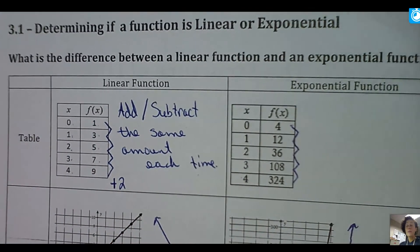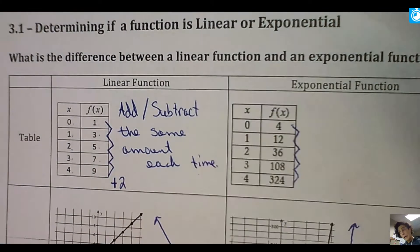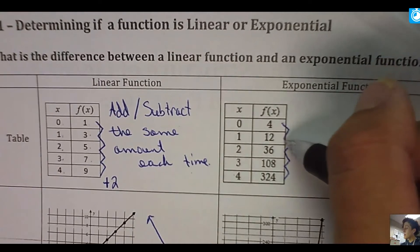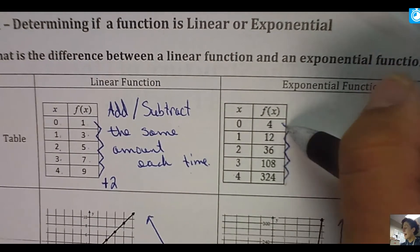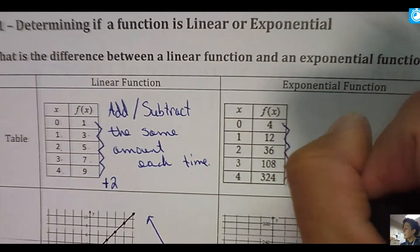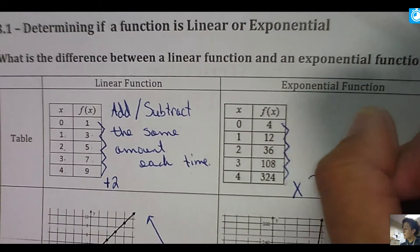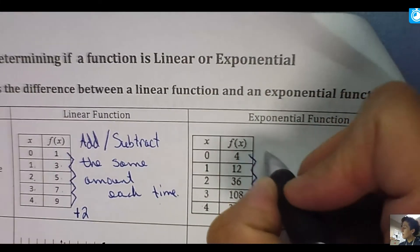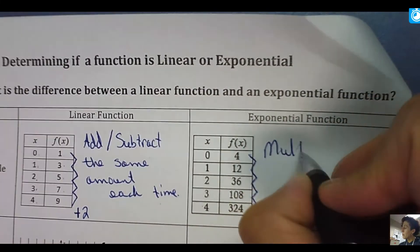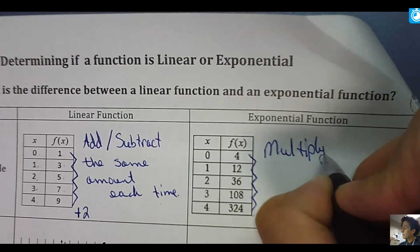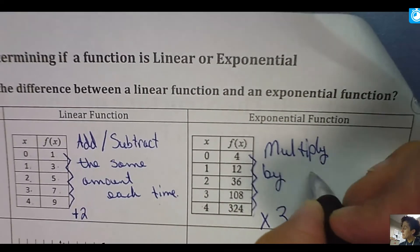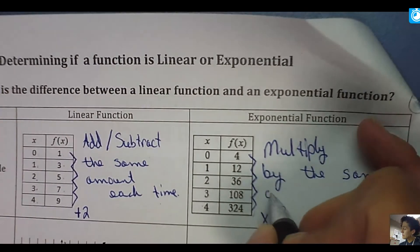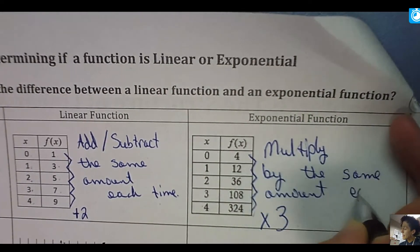I'm going to keep going. In exponential, you want to see. So this is also growing, but it's not adding the same amount. So this one's actually multiplying, and it's multiplying by 3. 4 times 3 is 12, 12 times 3 is 36. And so you're going to know it's exponential if they multiply by the same amount each time.